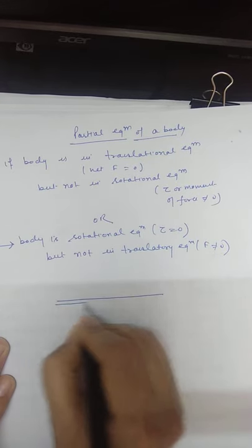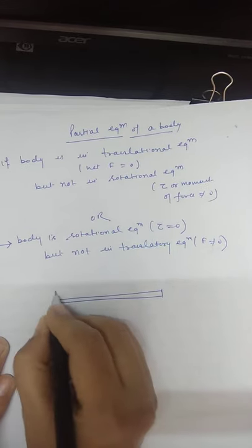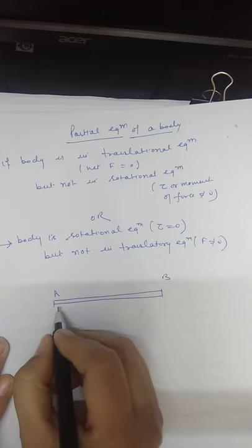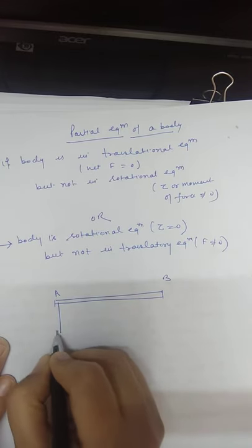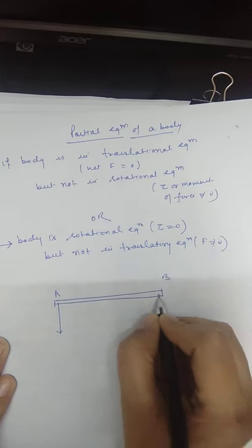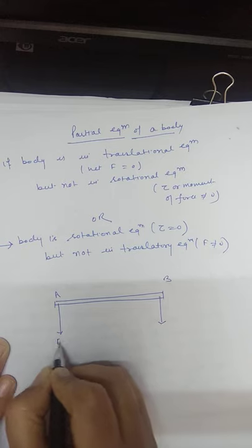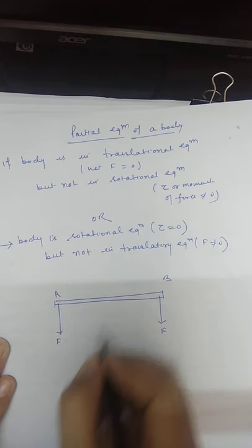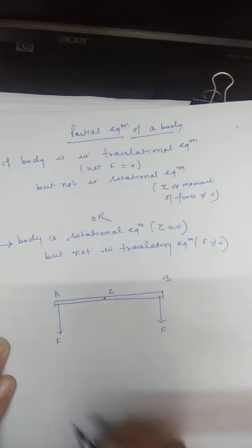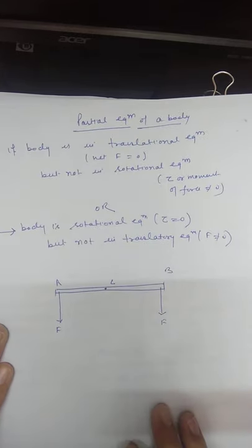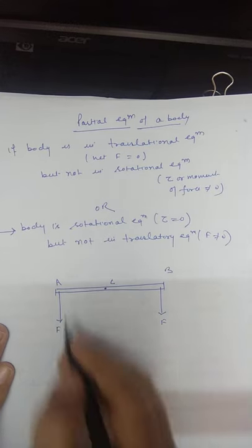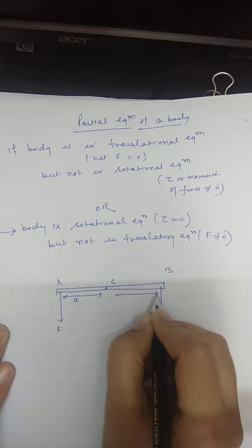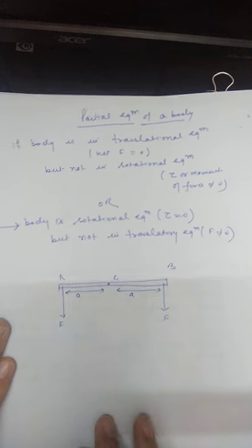Consider a rod AB. Two equal forces F and F are acting on it. C is the center point. The distance from A to C is A, and the distance from C to B is also A.